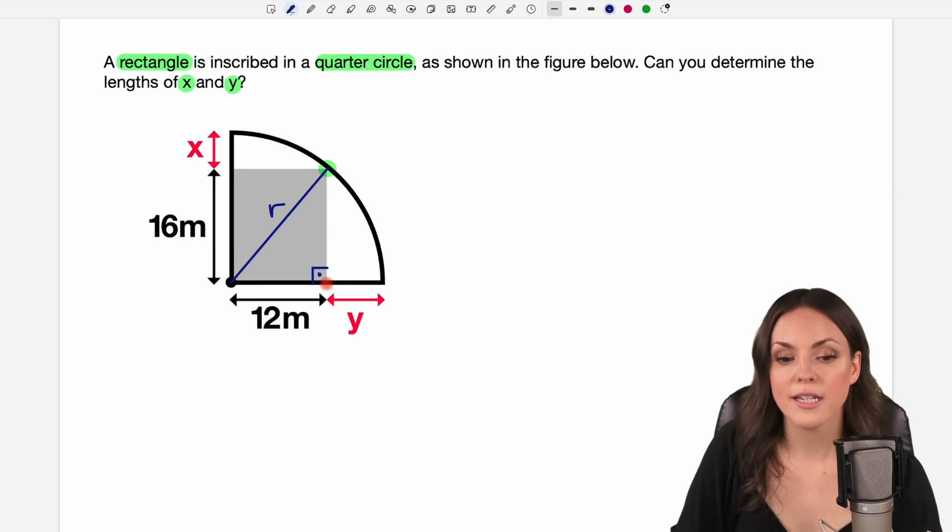And from this right triangle, we know the length of this side. It's given by 12 meters. And we also know the length of this side here because it is this side as well, which is 16 meters. And with this information, we can find the length of the radius.